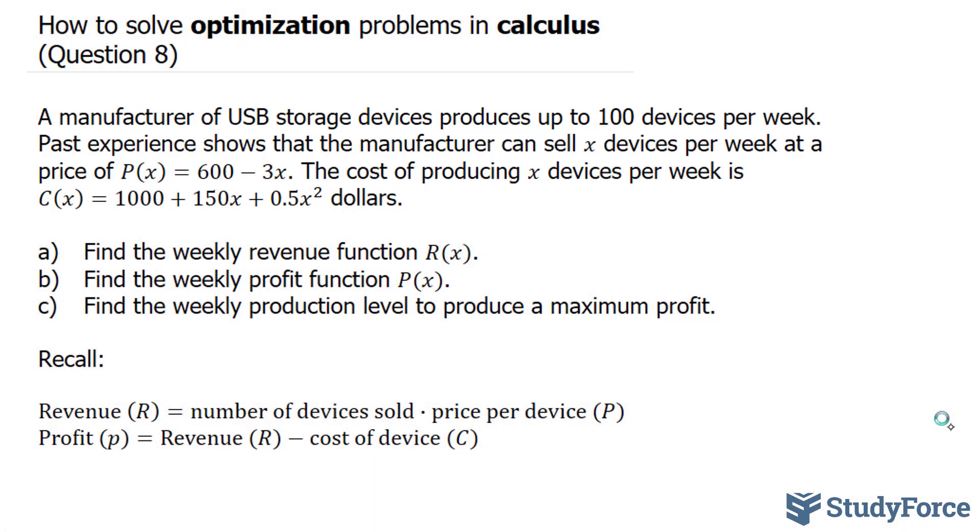Part A asks, find the weekly revenue function R(x). So they want us to produce a new function called revenue. And what revenue means for a company is the total amount of money they make. To find the revenue for this particular company, we'll need to take the number of devices sold, which is represented by the letter x, and multiply it by the price per device, which is represented by this capital P, 600 minus 3x.